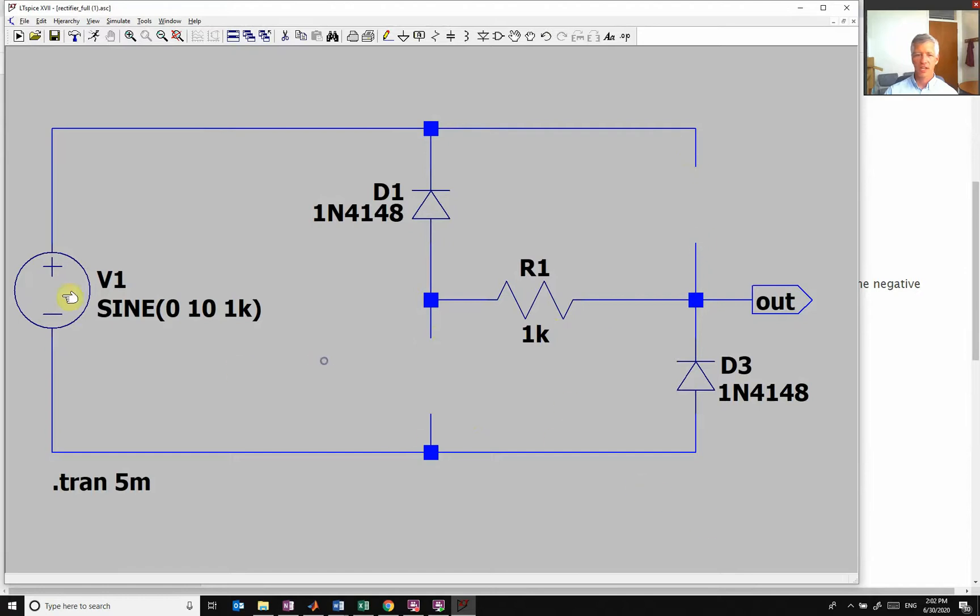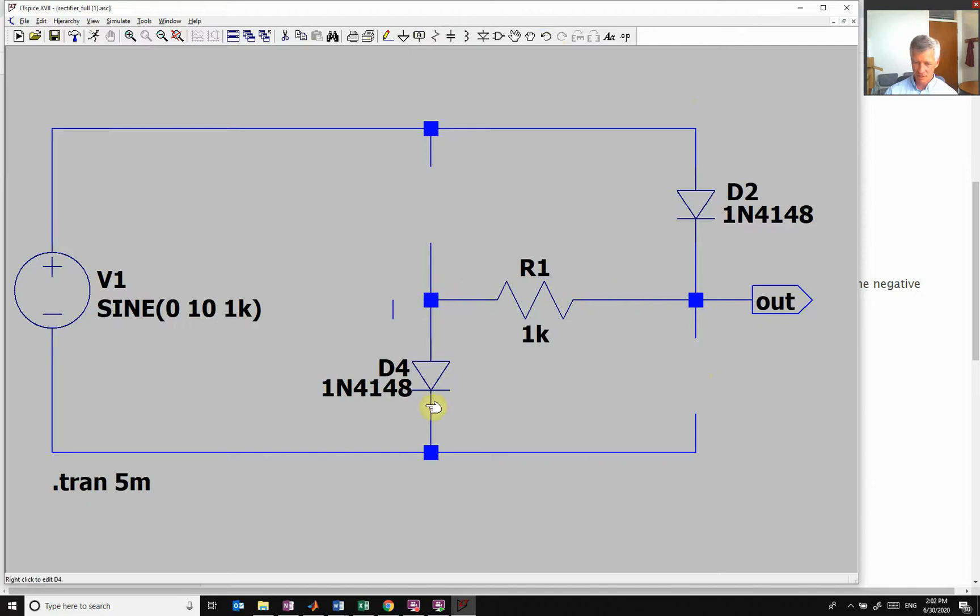So we're going to start like this. So when my voltage is positive, you see, oops, I deleted the wrong ones. Let's get these off. Okay, so when my voltage is positive, you see my current is going to flow through this diode, across the resistor, and then down.